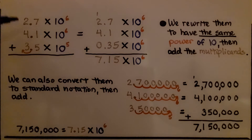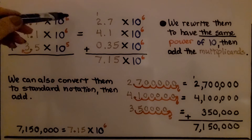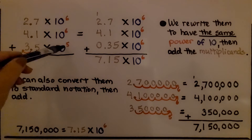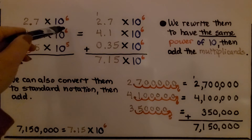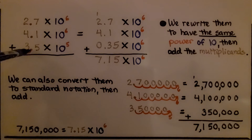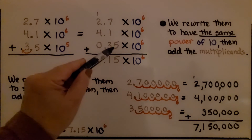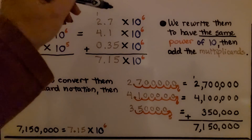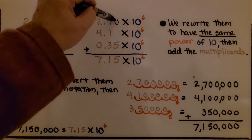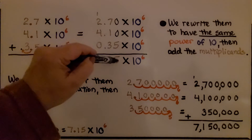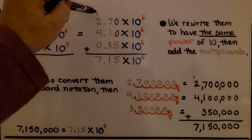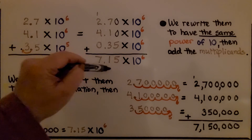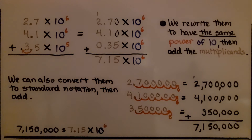Here we have three numbers to add: 10 to the sixth, 10 to the sixth, and 10 to the fifth. We move the third number up to 10 to the sixth by shifting the decimal one place to the left, turning it into 0.35. Now that all powers of 10 match, we add the numbers. Adding with trailing zeros as placeholders, we get 7.15 times 10 to the sixth power.